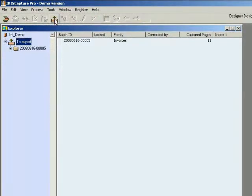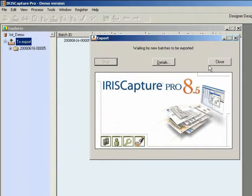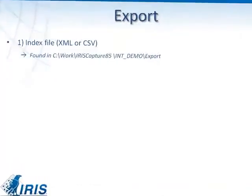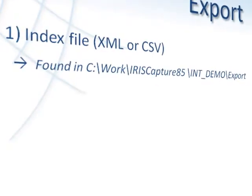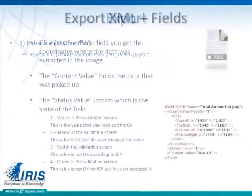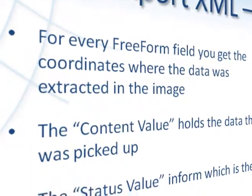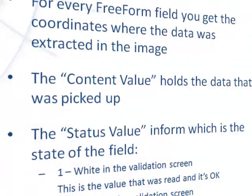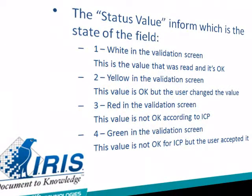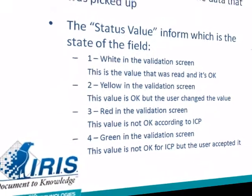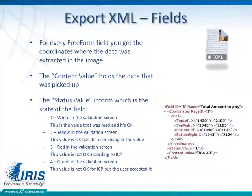Now everything's ready for export. I'll simply click on the export button up top. We have a choice of two different data files and output, either XML or CSV. For every free form field, you'll actually get the coordinates of where the data was picked up — so you get the content and coordinates, but also where we actually picked up that data. The third piece of information is the status value — what state was it in? Was it a value that was correct? Was it a value that needed correction, that was wrong?